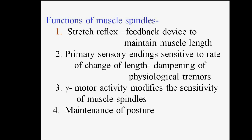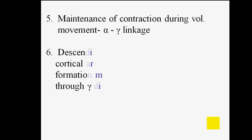These are the four basic functions of muscle spindle: first, the stretch reflex — they act as a feedback device to maintain muscle length; second, they maintain posture; third, they modify sensitivity; and fourth, the primary sensory endings are sensitive to the rate of change of length of the muscle.